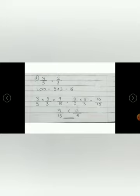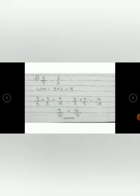The second fraction is 2 by 3. The denominator is 3, and 3 into 5 is 15, so multiply the numerator by 5: 2 into 5 is 10, giving 10 by 15. Now we have converted the two given fractions to 9 by 15 and 10 by 15. These are now like fractions. Since the denominators are same, we compare only the numerators — 9 and 10. 10 is greater, so 9 by 15 is less than 10 by 15. So if you get unlike fractions, you have to convert them into like fractions first.